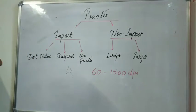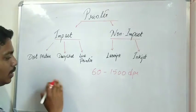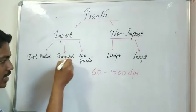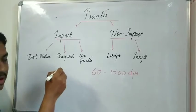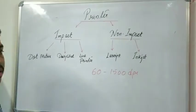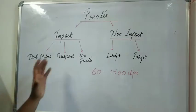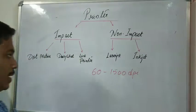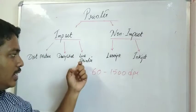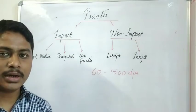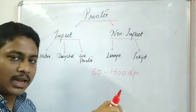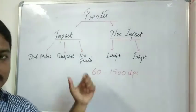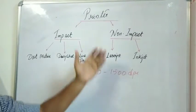The daisy wheel printer, as the name suggests, has a wheel-shaped mechanism. It strikes the ribbon and types the letters onto the paper. The line printer prints a single line at a time, then moves to the next line, as the name suggests.